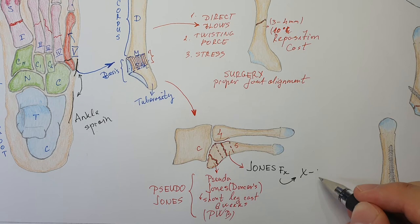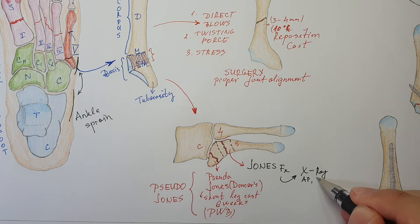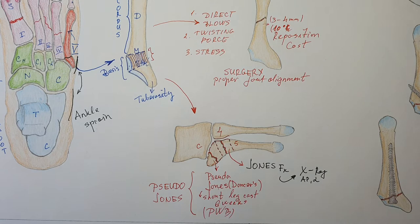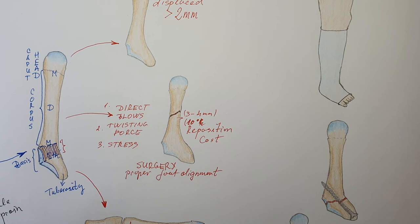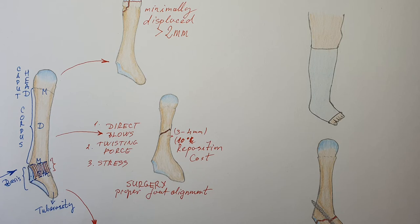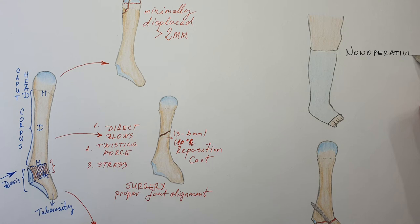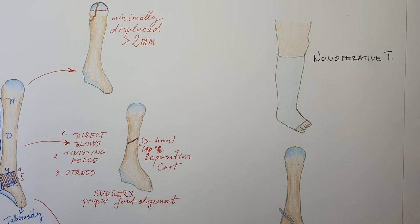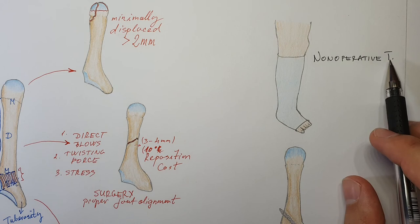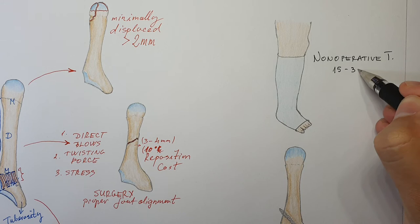Once you do an X-ray of the foot — an AP and lateral view — you can then see this fracture. In most European countries and in most textbooks, non-operative treatment is done when the fracture is not displaced. If you have no displacement, the fracture is simple, and the anatomy is normal — you can only see a fine fracture line — you can treat it non-operatively. Even then, there is a chance of 15 to 30% for this fracture to have non-union.